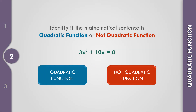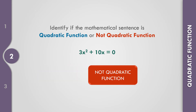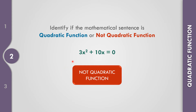How about example number 2? We have 3x squared plus 10x equals 0. The highest degree is 2, so this is quadratic. But let us identify if this is a quadratic function or a quadratic equation. There is no y and no f of x, so this given is not a quadratic function. A quadratic function must have y or f of x. So 3x squared plus 10x equals 0 is only a quadratic equation.